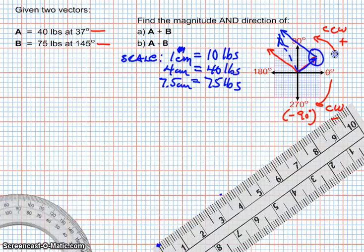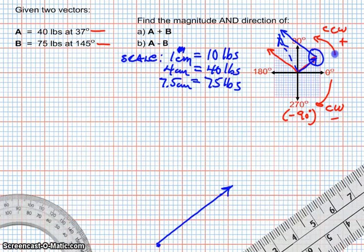So, I'm starting here, and I've got to go for 4 centimeters. So that's going to take me all the way to there. 4 centimeters. That's, and I'll just move this out of the way here for a minute. That's my vector A. 40 pounds at 37 degrees. So that was my 37 degree angle, and that's 40 pounds.